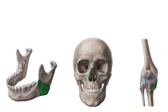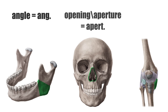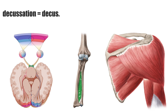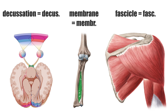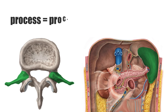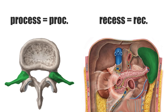Here's a list of other commonly used abbreviations regarding anatomical features. ANG for angle, APERT for opening or aperture, B stands for bursa, which is a fluid-filled sac lined by synovial membrane. DECUS is the abbreviation for crossing or decussation, and MEMBR is short for membrane. FASC is the abbreviation for fascicle — a fascicle is a bundle of muscle fibers surrounded by a perimysium. PROC is short for process, which is a projection from a structure. And REC for recess, which is a depression or cleft.